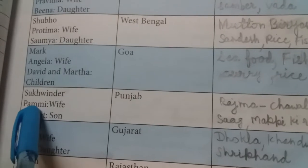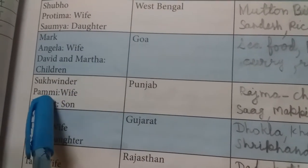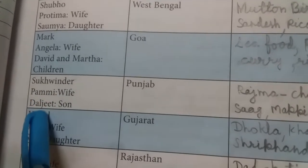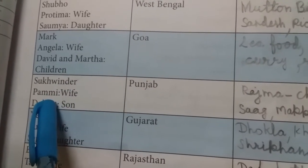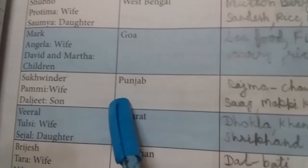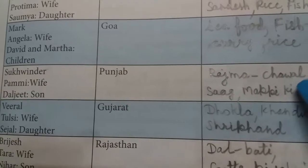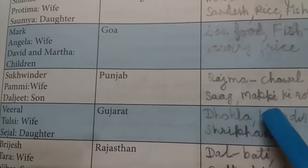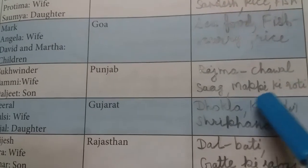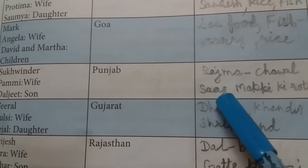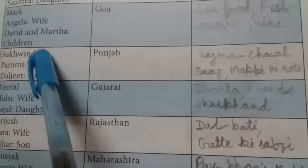The next family: husband's name is Sukhfinder, wife's name is Pammie, and son's name is Daljit. Sukhfinder, Pammie, and Daljit belong to Punjab. Punjab के लोगों का favorite food Rajma Chawal, Saag, और Makki ki Roti है।